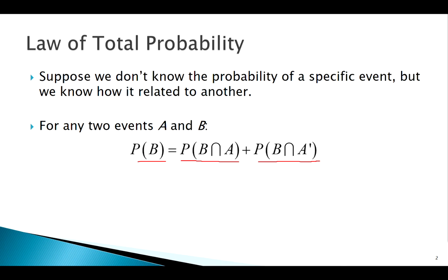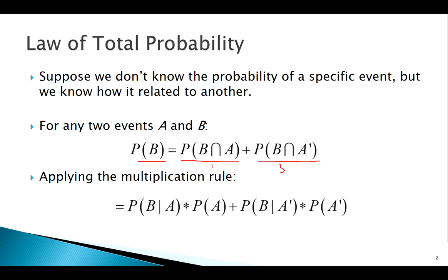Now if we apply the multiplication rule to each of these pieces — this piece right here and this piece right here — we get the final form of the Law of Total Probability.